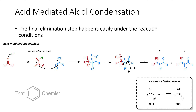In this case, if this were the E product, R3 would have to be the bulky substituent, as R3 and the carbonyl would be the two priority groups on the alkene. If you're not sure how we determine whether an alkene is E or Z, I would recommend you check out the video we've made on that.